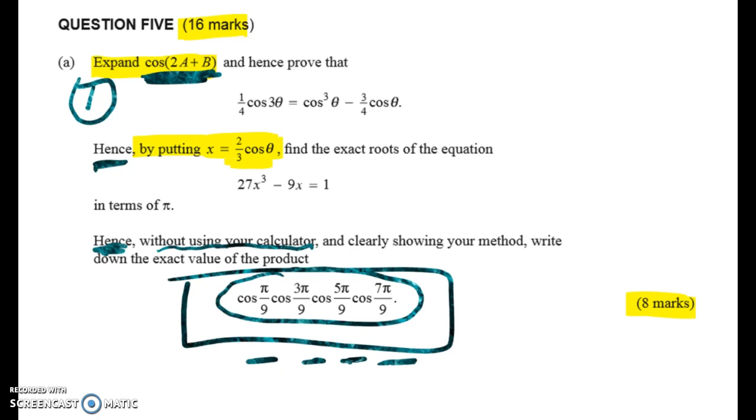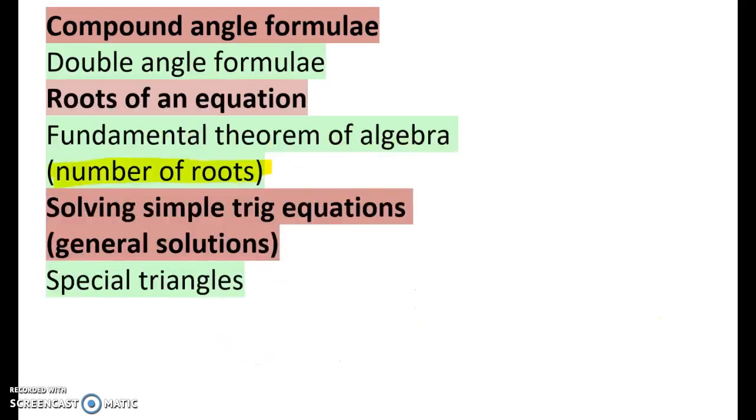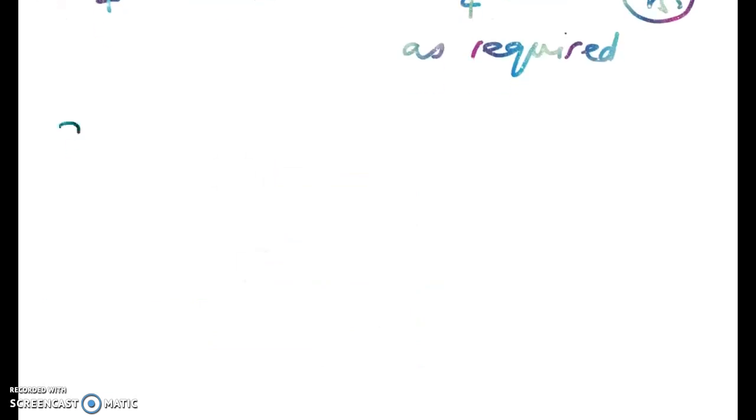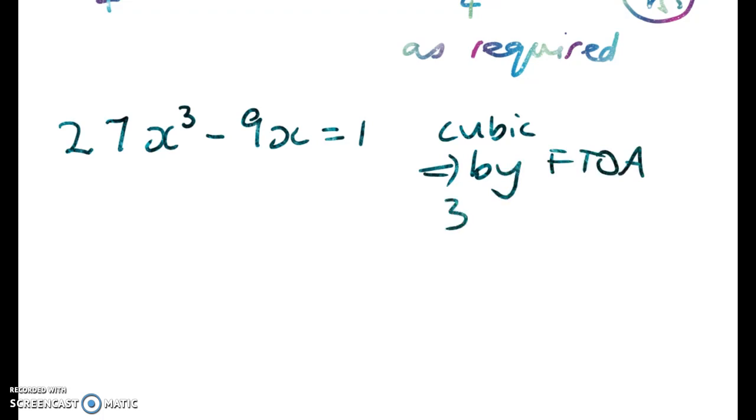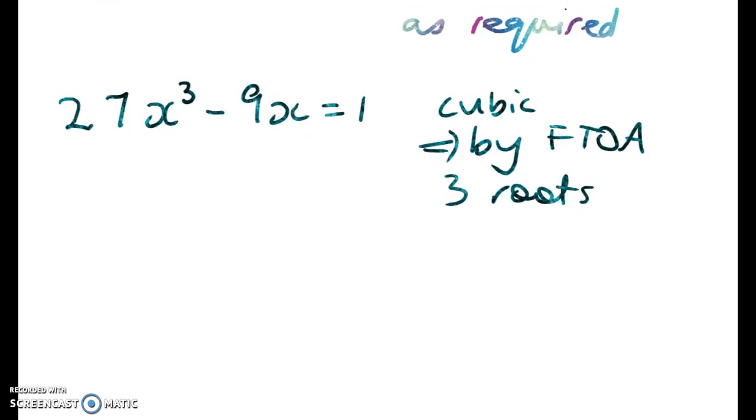By putting x equal to 2 thirds cos theta, find the exact roots of this equation in terms of pi. So what we're going to do is substitute in here, solve that equation, and then at the end we're going to work backwards to figure out what x is. Okay, so let's see what we've got. We've got 27x cubed minus 9x equals 1. We know that it's a cubic. So by the fundamental theorem of algebra, it has three roots.